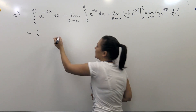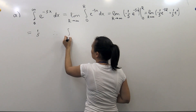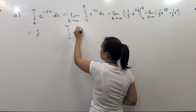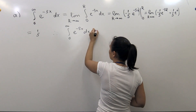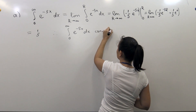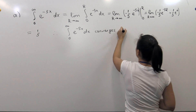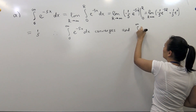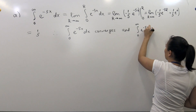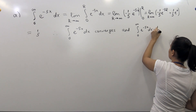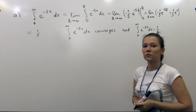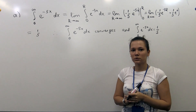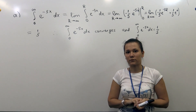So at the end we conclude that the improper integral from 0 to infinity of our function converges and is equal to 1 over 5. We have now found that our integral converges and found the actual value of this integral.